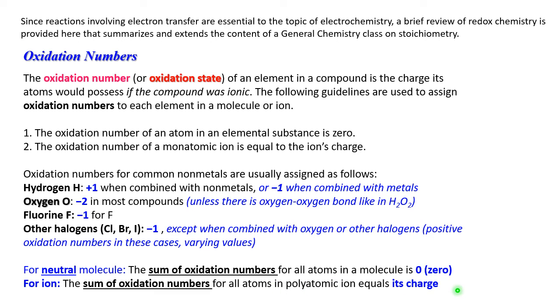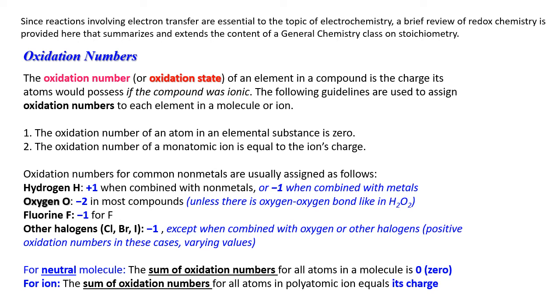Again, you can look at examples in chapter 4. Next concept you already know theoretically: it's half-reactions. Reactions when only one element changes its oxidation state. Half-reactions contain electrons. There is an agreement to always write it as a reduction, so electrons are at the left side.